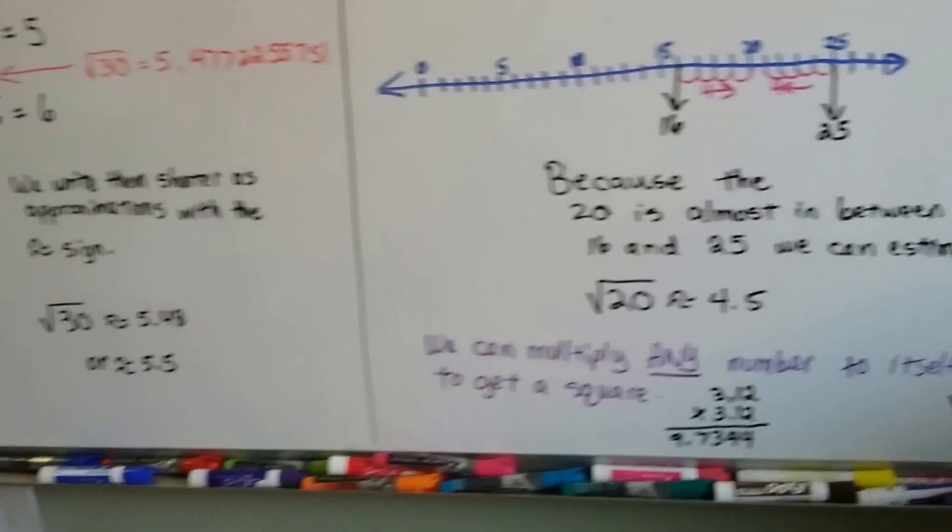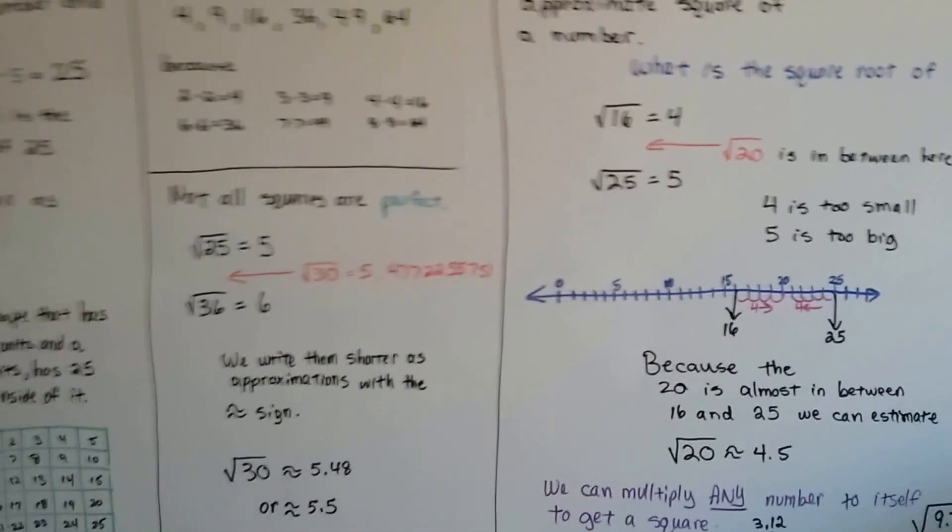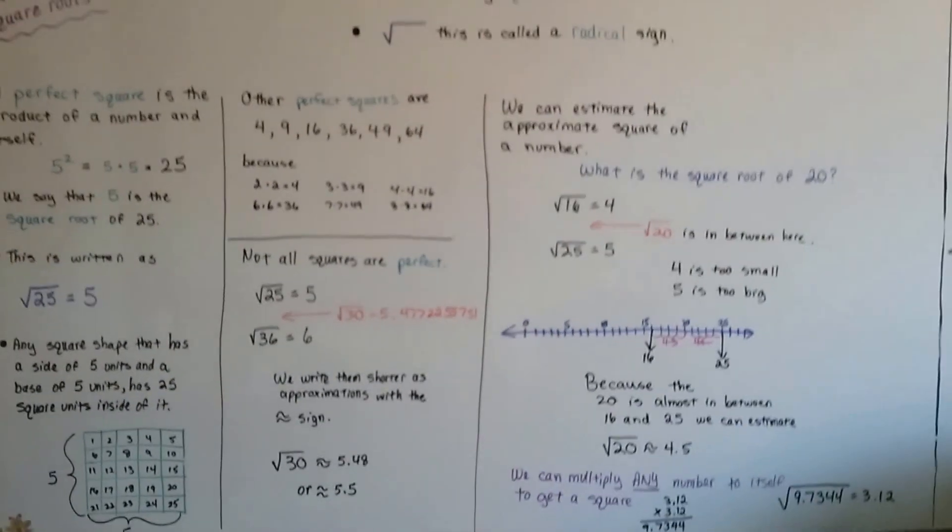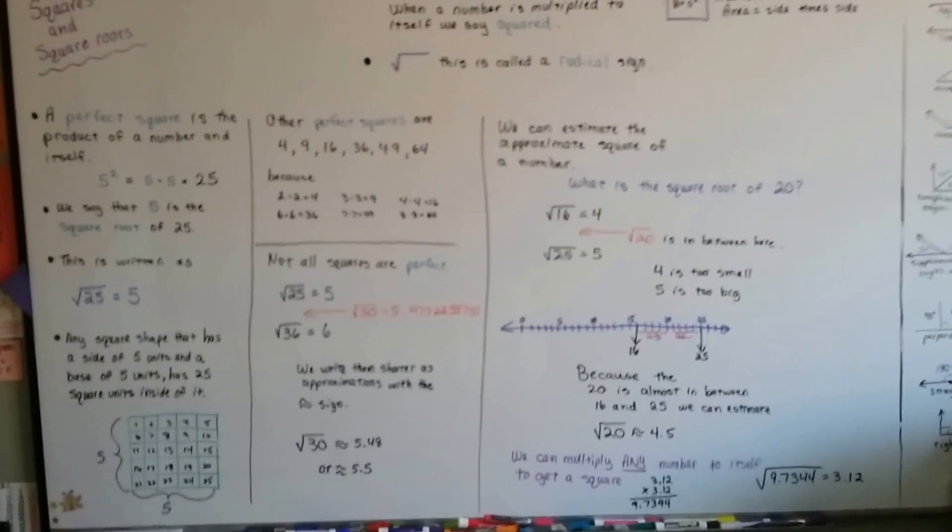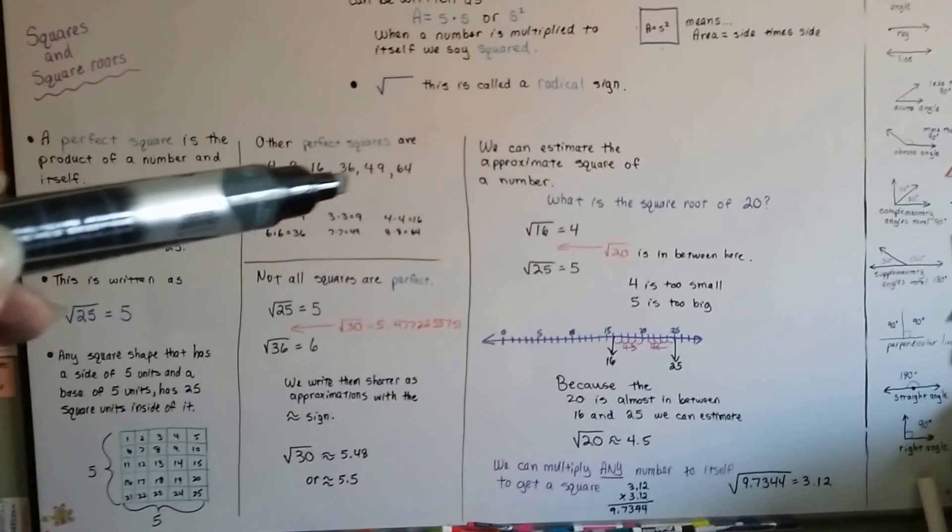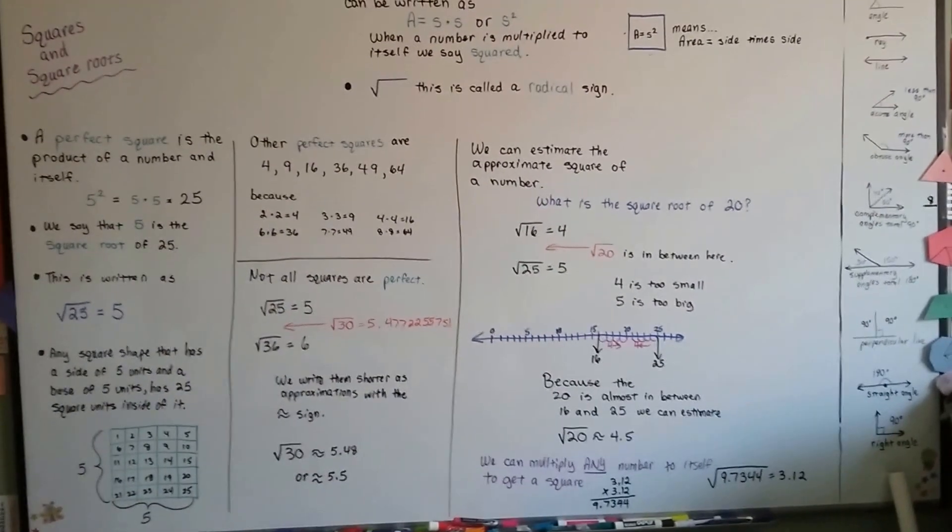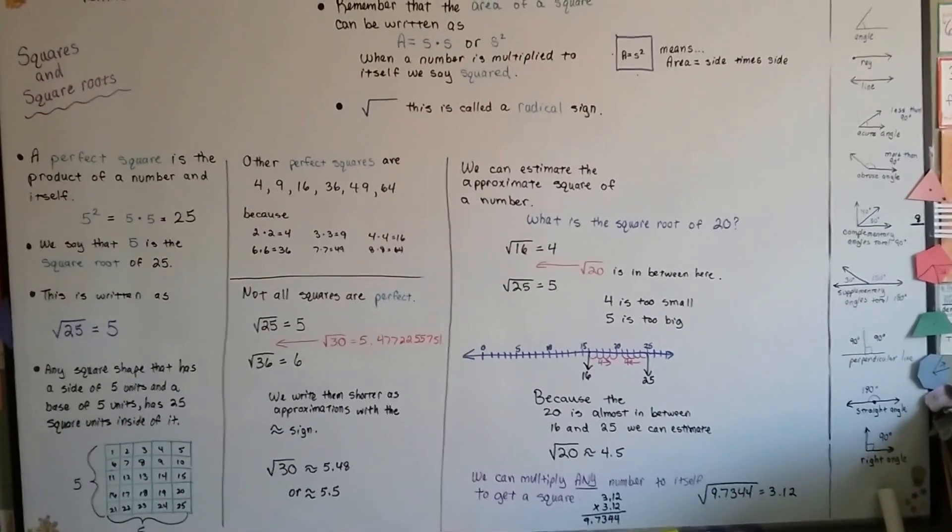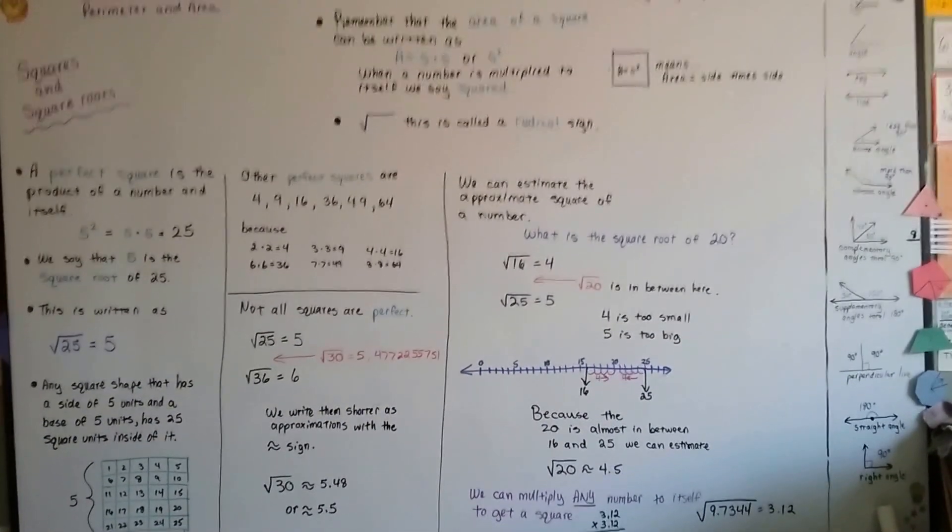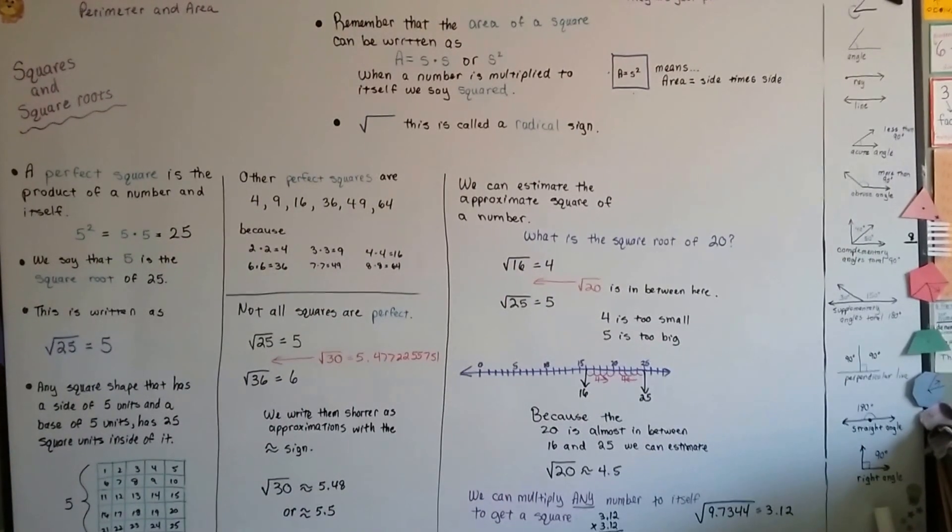So we can get decimals. So they don't always have to be perfect squares. Perfect squares are when whole numbers are multiplied to themselves and we get this nice round number without a decimal point. Now you know about perfect squares, squares, and square roots. I'll see you next video. Bye.